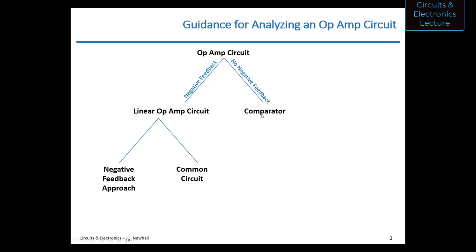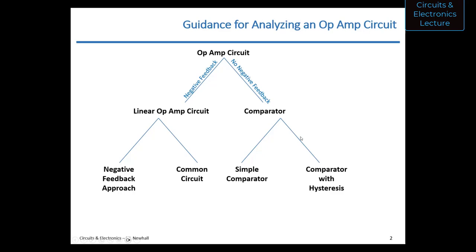A comparator compares two voltages and lets the circuit know which voltage is higher. Why is that useful? A thermostat, for example: is the temperature higher than a set point? Turn the heat off. Is the temperature lower than the set point? Turn the heater on. We're going to look at two kinds of comparators: a basic simple comparator with a single threshold, and a comparator with hysteresis that has two thresholds. These comparator circuits take advantage of a limitation of op amps.